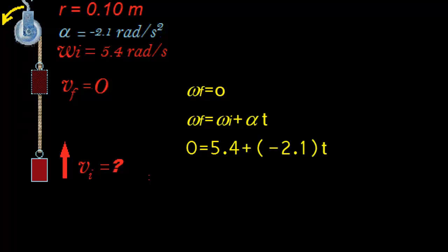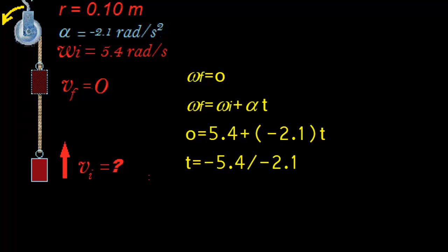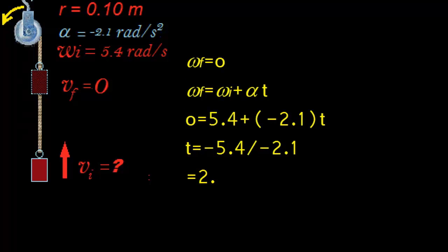plus angular acceleration, which is negative 2.1 times t. And t would equal negative 5.4 divided by negative 2.1 equals 2.57 seconds.